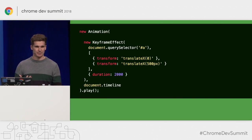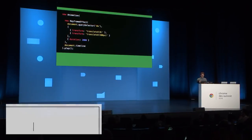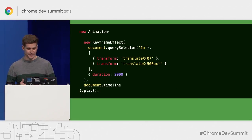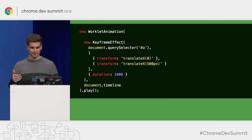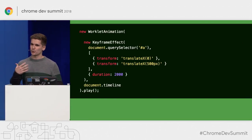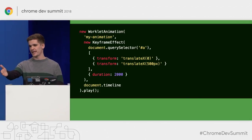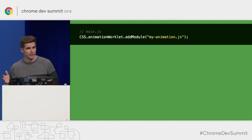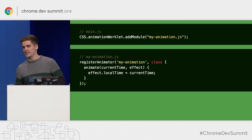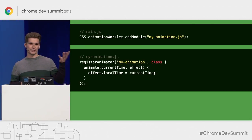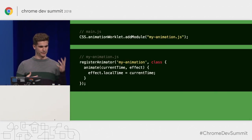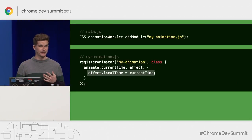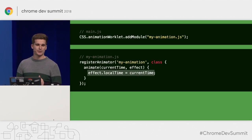What you see here is a normal Web Animations API animation. A worklet animation is actually very similar — I just use WorkletAnimation instead of Animation. Because we're associating this animation with a worklet, we need to provide a worklet name. Other than that, it stays the same: we have a KeyframeEffect targeting an element with two keyframes over two seconds. Then on the CSS namespace we have animationWorklet and can call addModule. Within our animation file, we have an animate callback where we get the current time and the effect of the animation. It's our job to set the local time of the effect depending on the current time. If we do it as a pass-through, it will behave just like a normal Web Animations API animation. But this is JavaScript, so you can implement arbitrarily complex time mappings.